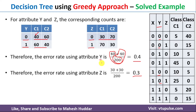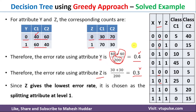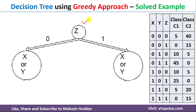We have calculated the classification error for X (0.5), Y (0.4), and Z (0.3). Among these three, the classification error for attribute Z is minimum, so we consider Z as the root attribute and start building the tree. Z is the root node with two branches: Z equals 1 and Z equals 0.